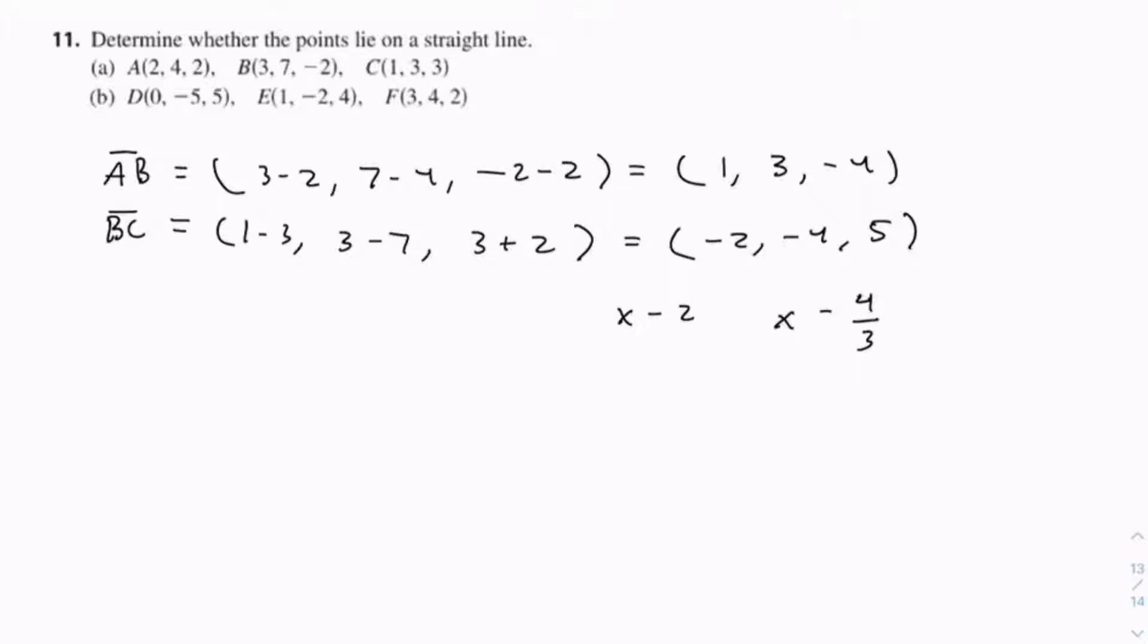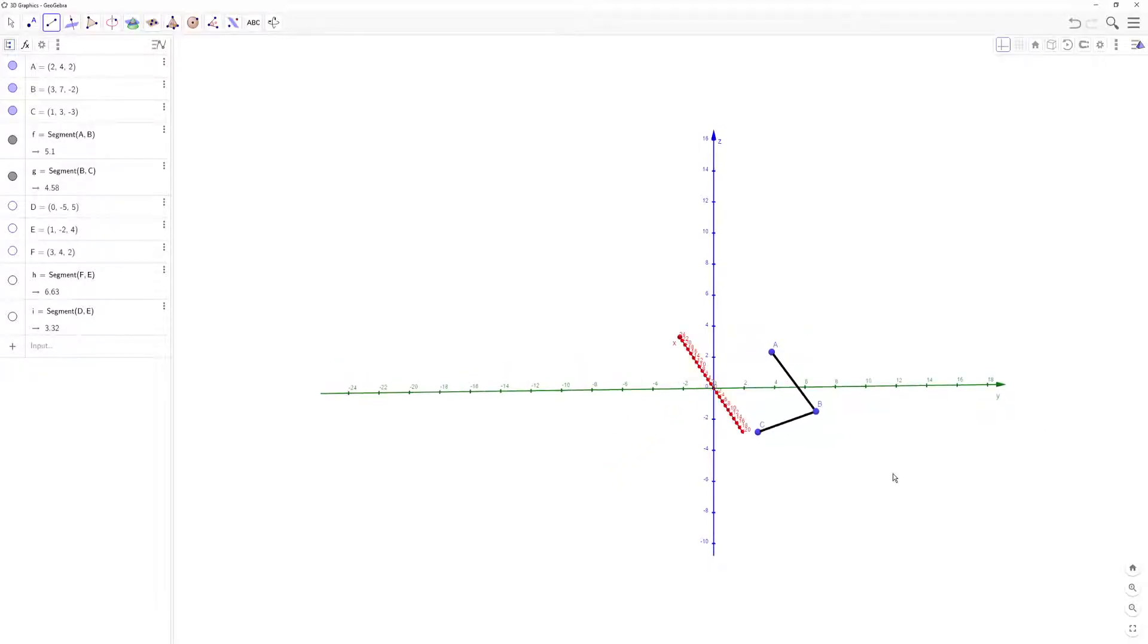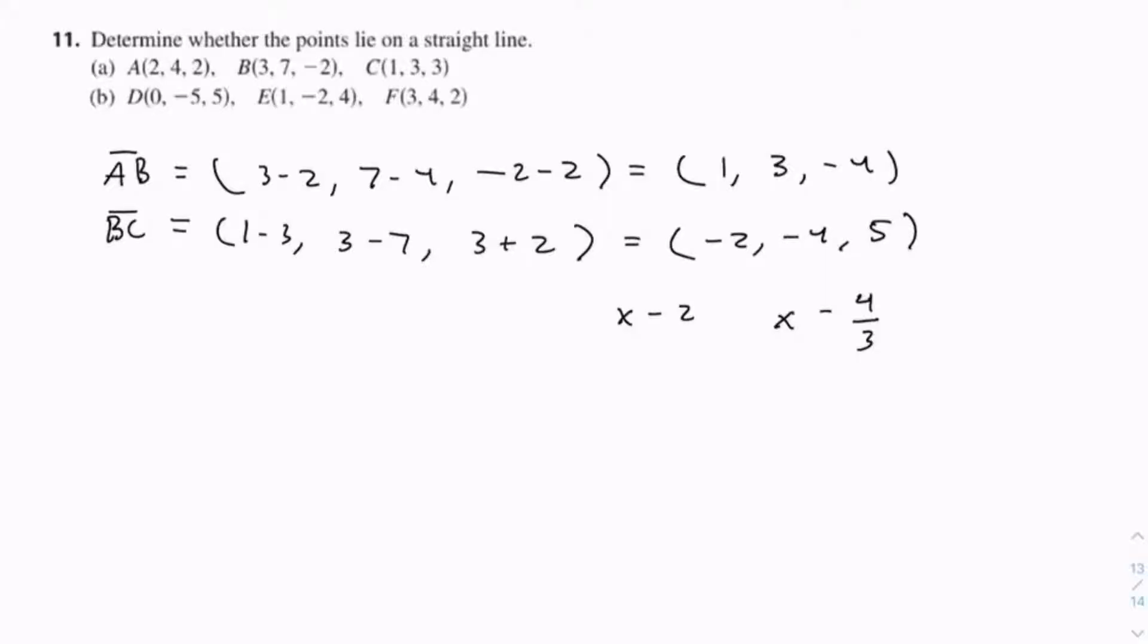And I can show this further by showing the graph of these points. And it will become very clear that these points do not lie on a straight line. So let's go to part B. So this is A. So now we go into B.